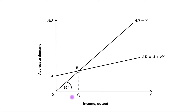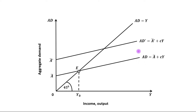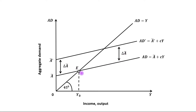Now suppose that if autonomous spending increases, then AD will increase and this will lead to an upward shift in the AD curve. This is the new AD curve where autonomous spending has been increased from A-bar to A-bar dash. The difference between these two AD curves will be the change in A-bar.